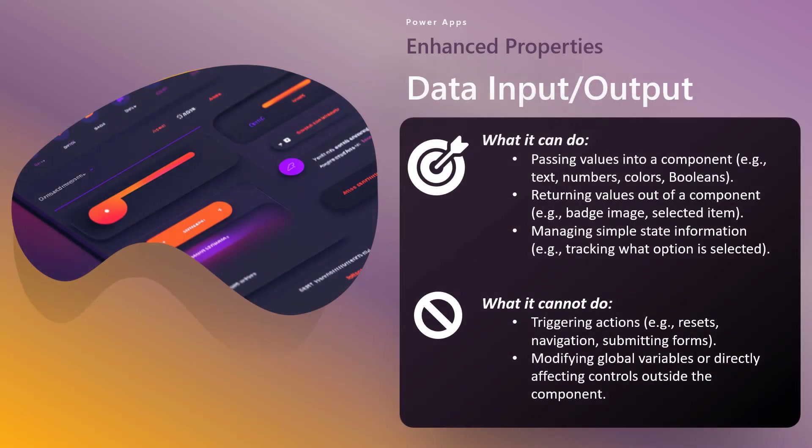Let's dive deeper into data properties. These have two varieties — input and output — and are the most similar to what we have today. They're for simple passing of values into a component, you can define the data type: text, numbers, colors, booleans, images. You return values out of a component with output. You can also manage simple state between the two. What they can't do: they can't trigger actions like navigation, submitting forms, resets, or selects. And you're not going to be able to modify global variables directly or affect controls outside of the component. You're simply passing data in and out that either the app can use on the output or the component can use on the input.